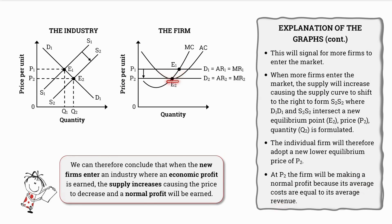We can therefore conclude that when new firms enter an industry where an economic profit is earned, the supply will increase, which will cause the price to decrease, and a normal profit will then be earned.